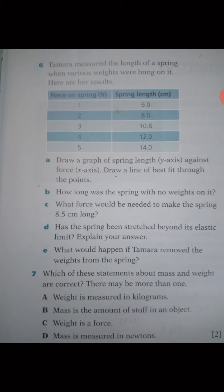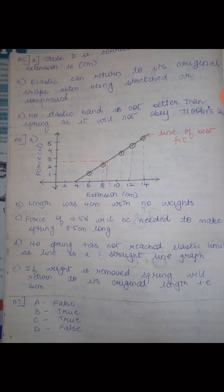Question 6A: draw a graph of length against force and draw a line of best fit. The line of best fit is the line which covers the maximum points on the graph. Force is taken on the y-axis (vertical axis) and extension in centimeters on the x-axis. Force ranges from 1 to 5 Newtons and extension from 6 to 14 cm, so we use multiples of 2 on the x-axis. When we plot the values, we get a straight line passing through all the points — that is the line of best fit.